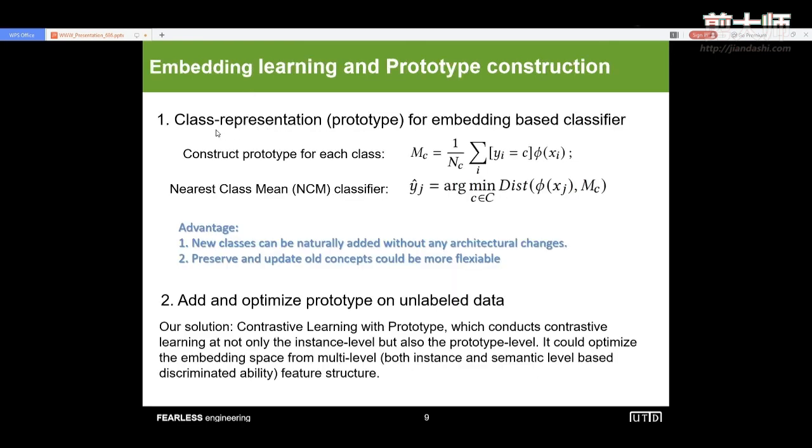When we apply the embedding-based classifier, we use the class representation, we call it the prototype here, to construct the embedding-based classifier. The construction of the prototype for each class could be summarized as the mean value of the output embeddings from the different instances that come from one of every class. After we construct the prototype for every class, we will use the nearest class mean to determine the final assignment for every incoming instance.